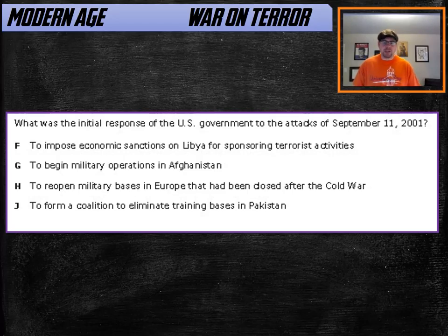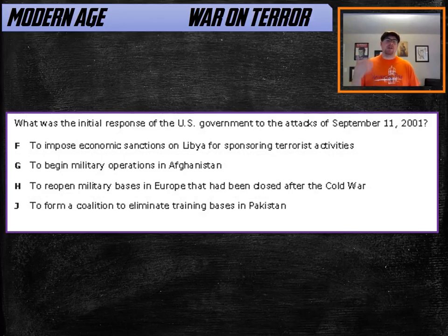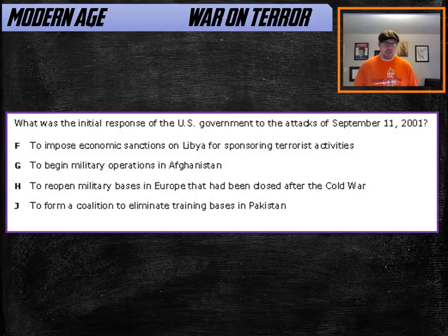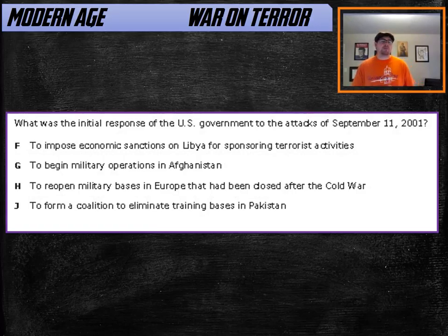The terrorist attacks were launched by al-Qaeda on targets in the United States. Hijacked airplanes were crashed into the World Trade Center towers in New York City and into the Pentagon in Washington, bringing the two towers down and causing thousands of deaths.